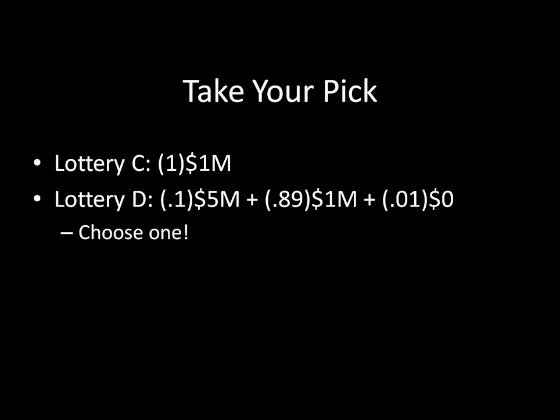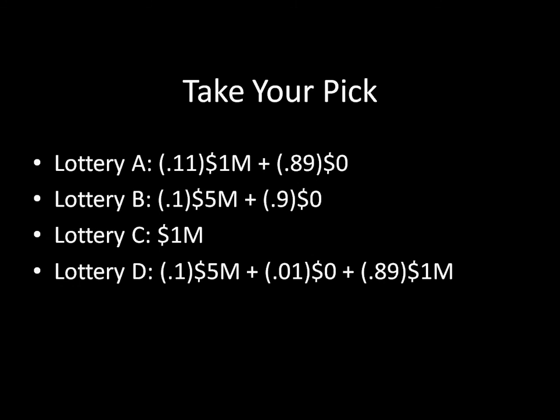So your comment should have A or B, and then it should have C or D. And now that you've done that, let's take a little bit of a deeper look at these lotteries. These are all four of those lotteries that we were looking at before, and I want to do some breaking down and disaggregation of these lotteries to really see what's going on here.